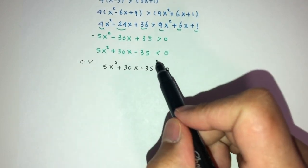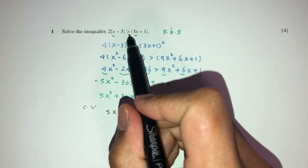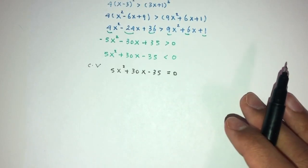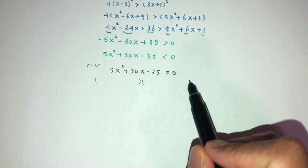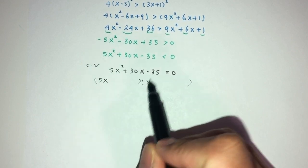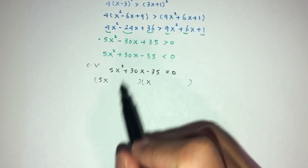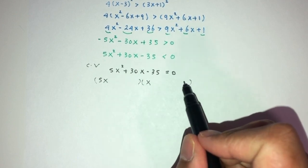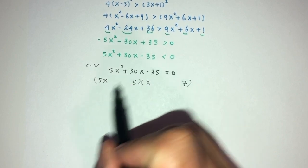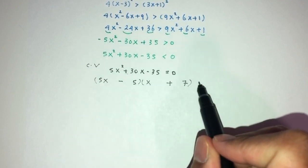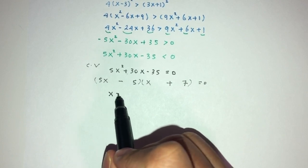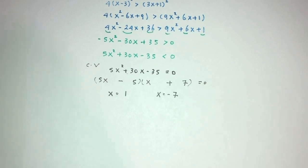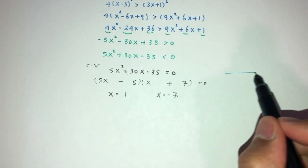We don't need the equal sign in the original inequality, but we use it to find critical values. Factorizing 5x squared plus 30x minus 35: we get 5(x minus 1)(x plus 7), giving critical values x equals 1 and x equals minus 7. If you're unsure how to factorize, you can always use the quadratic formula.